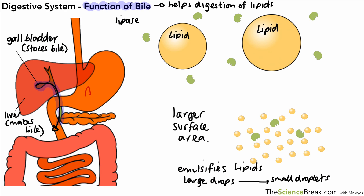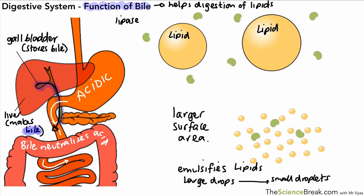The second job of bile relates to the fact that the stomach produces hydrochloric acid — which helps protease enzymes work — making conditions inside the stomach acidic. Bile neutralizes that acid as the food leaves the stomach, so that the enzymes in the small intestine are able to work, since they wouldn't function properly in acidic conditions.